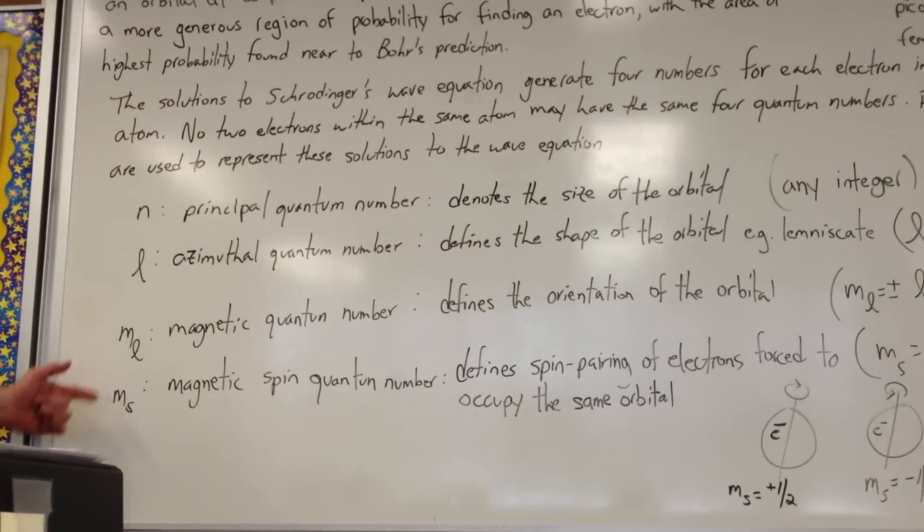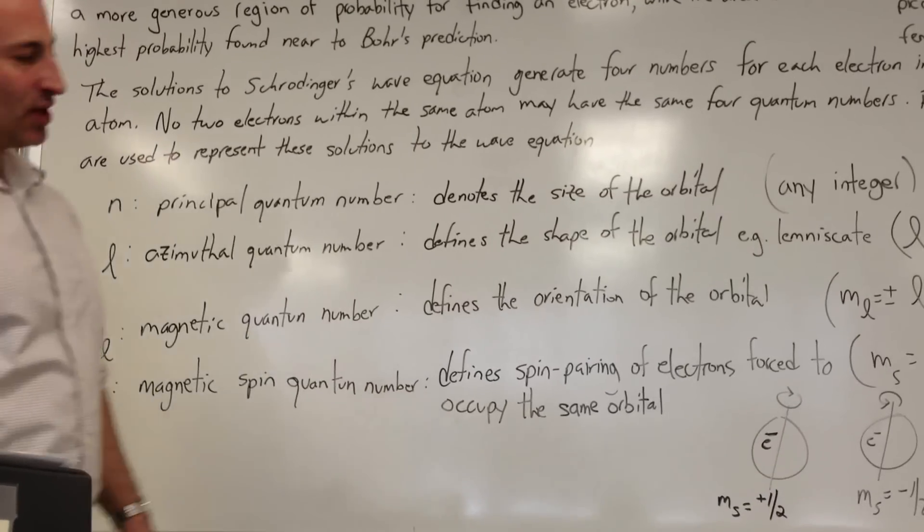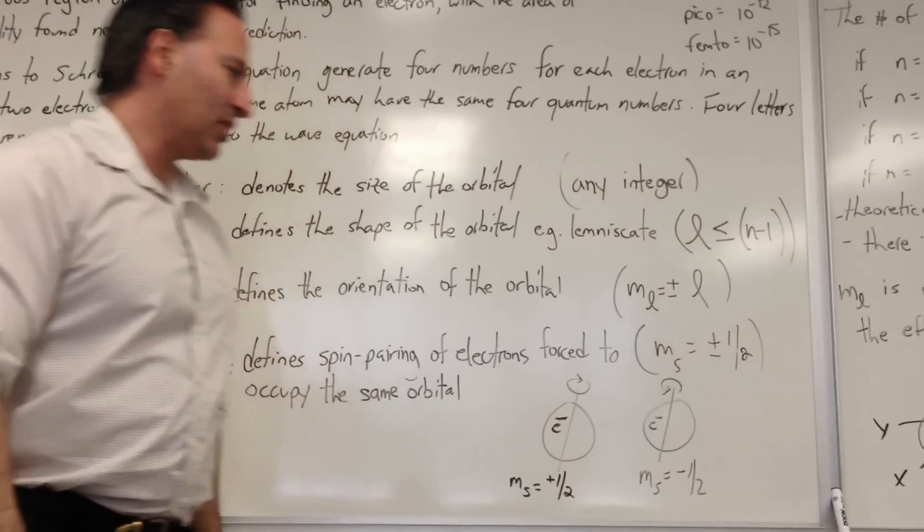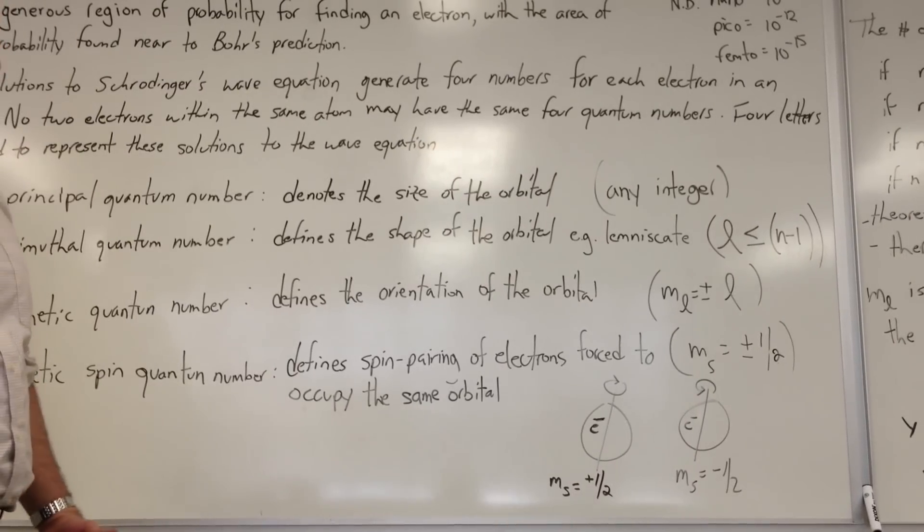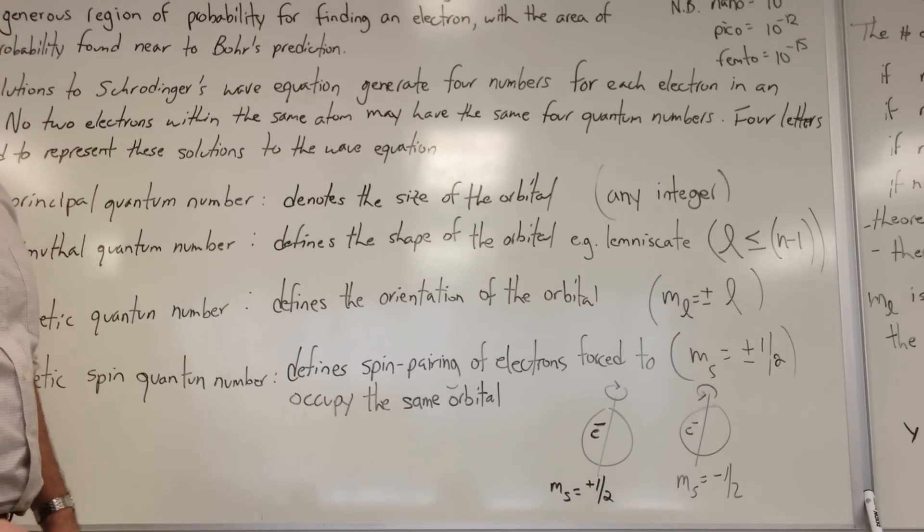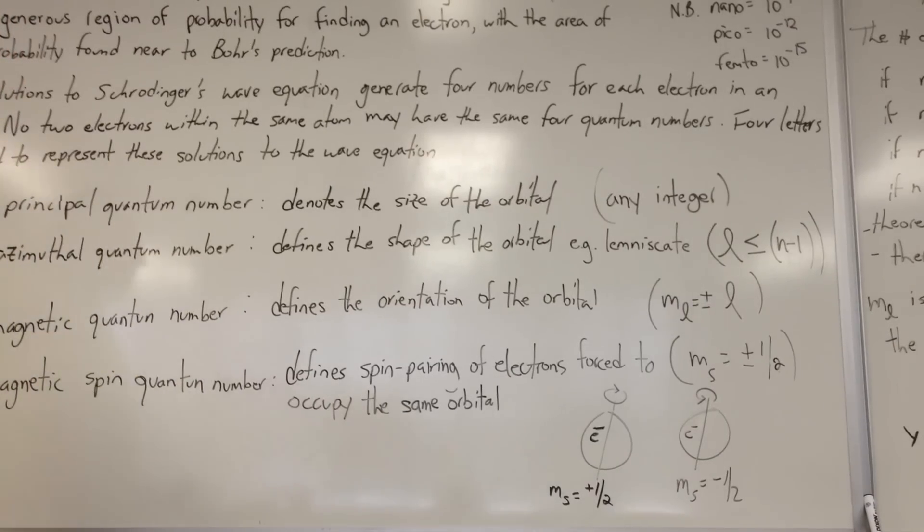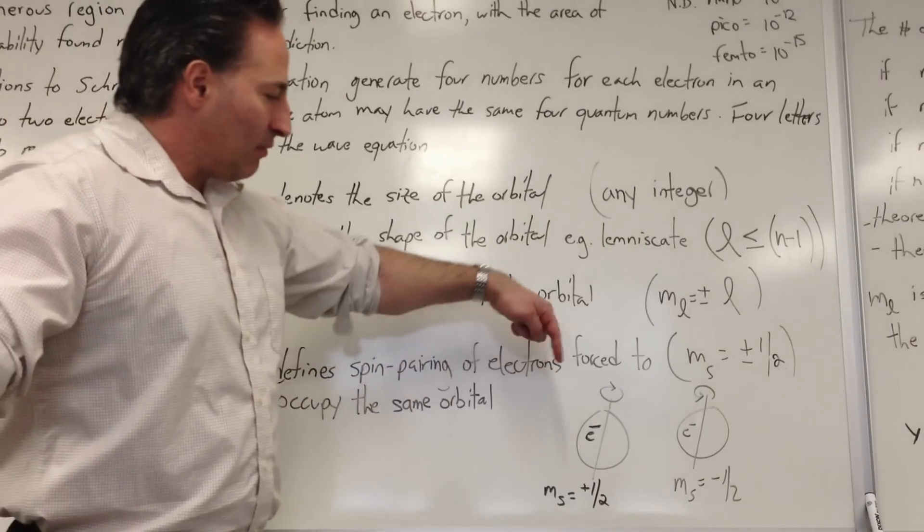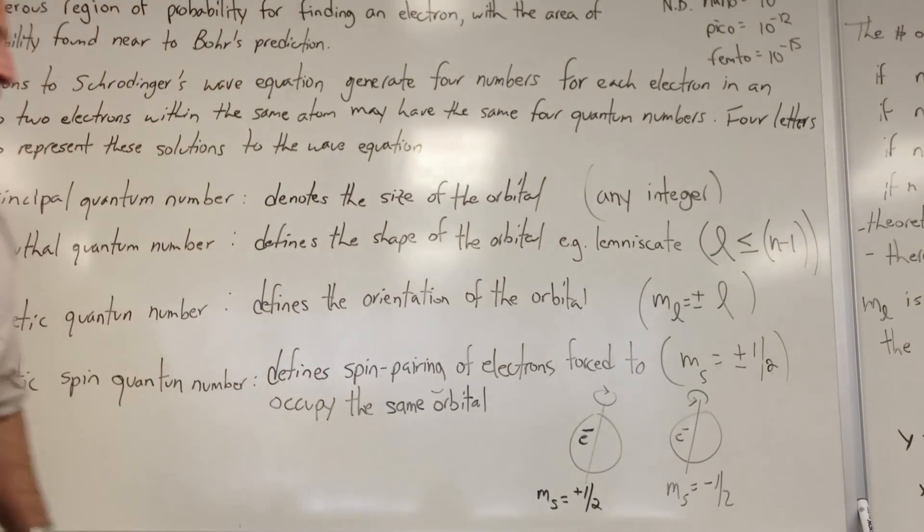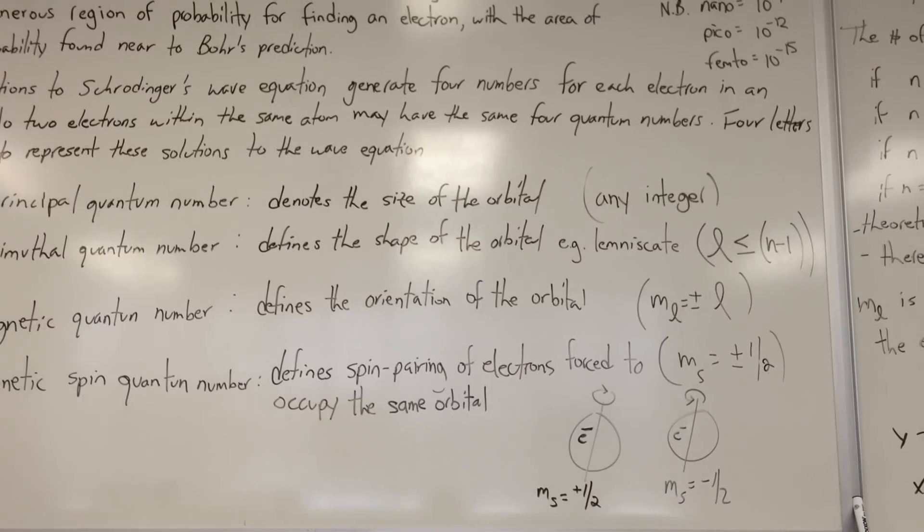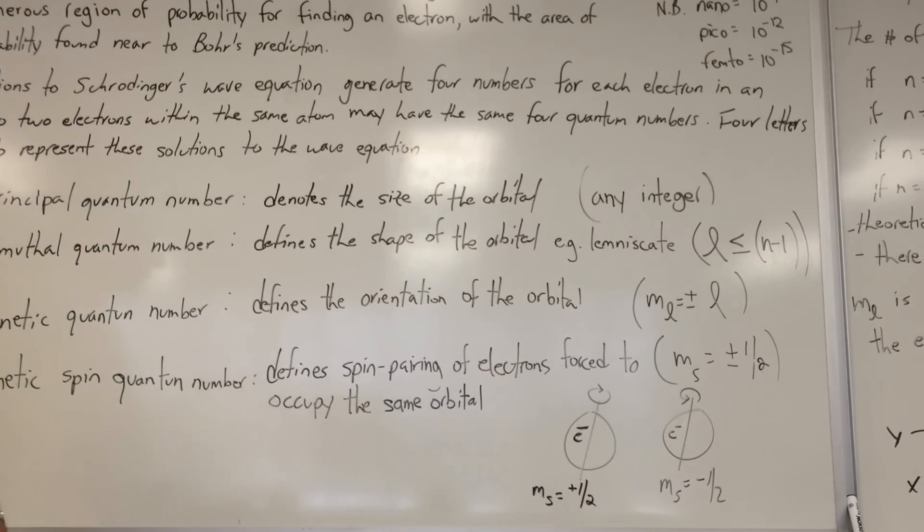M sub S is the magnetic spin quantum number, and I've drawn a little picture here of an electron spinning. Of course, that assumes that the electron is a particle, but it's hard to describe things like that in quantum chemistry. But if you were to picture an electron as a particle, you could have one spinning clockwise, or you could have it spinning anticlockwise. And when charged particles spin, they generate a magnetic field.